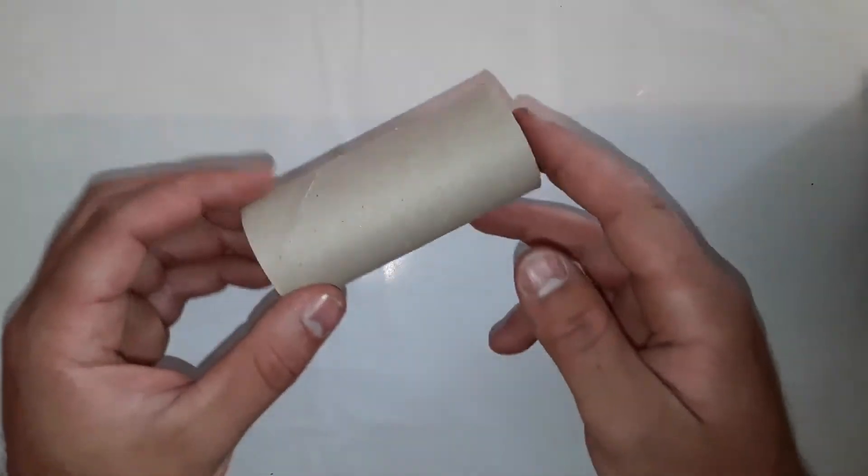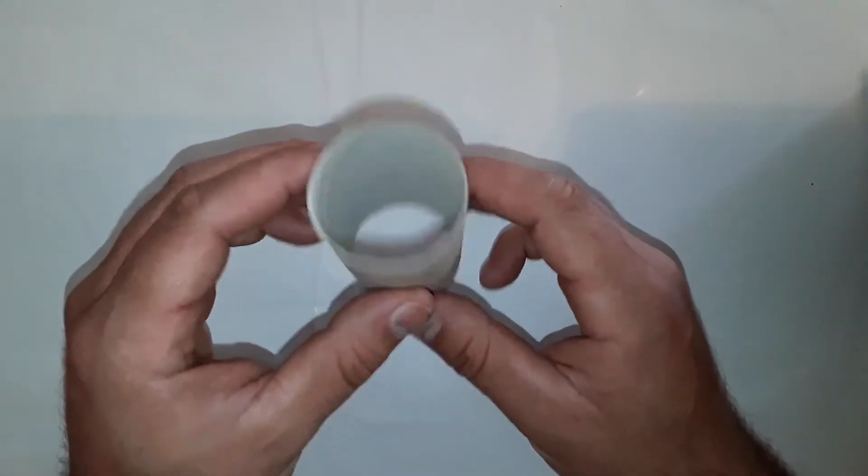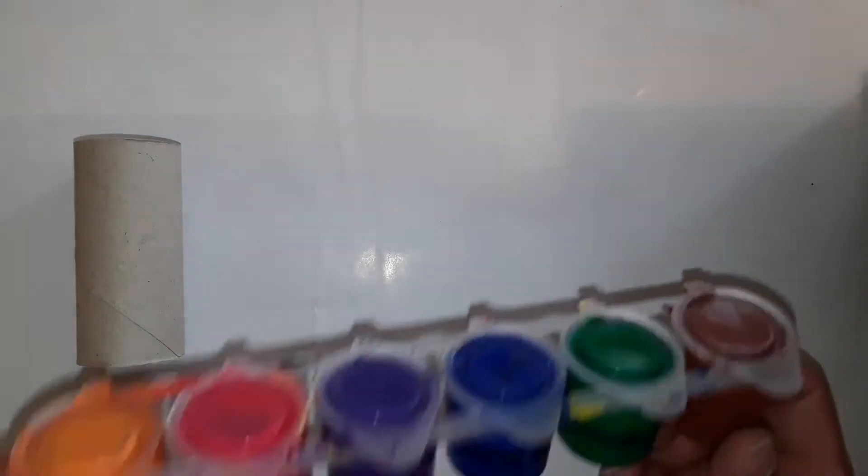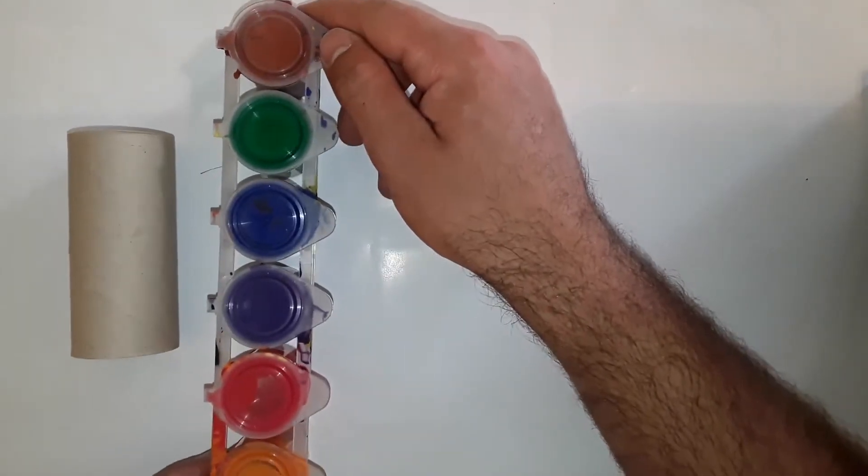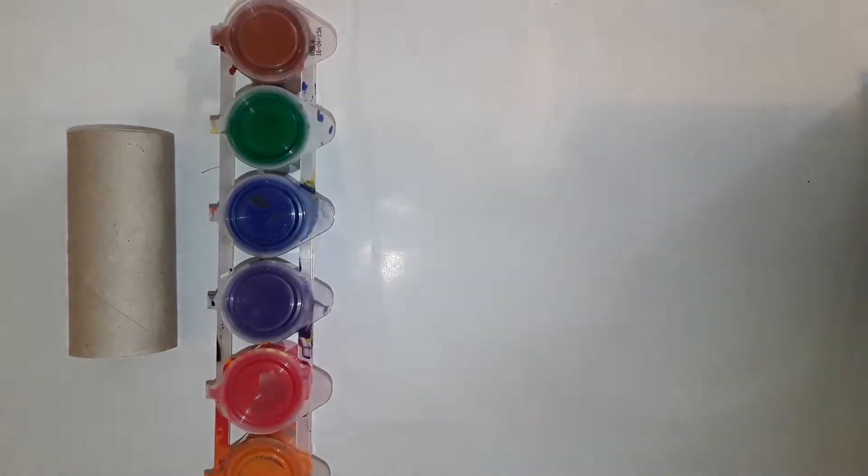Materials: First we need a toilet paper roll which are normally at home. Then we need gouache or acrylic color. You can choose the color.